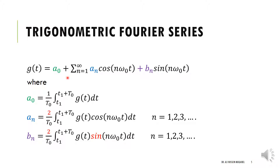To represent a signal as a Fourier series, you need to find the constant a naught and the multipliers a_n and b_n. The coefficient a zero is the average value — the area under the curve divided by the period, integrating over one period T naught. To find a_n, multiply your signal by cosine; to find b_n, multiply by sine. Note the factor of two in both formulas — this is a commonly forgotten term from the derivation.